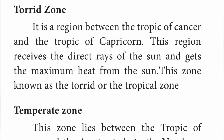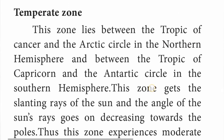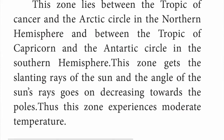The temperate zone lies between the Tropic of Cancer and the Arctic Circle in the northern hemisphere, and between the Tropic of Capricorn and the Antarctic Circle in the southern hemisphere. This zone gets the slanting rays of the sun, and the angle of the sun's rays goes on decreasing towards the poles. Thus, this zone experiences moderate temperature.